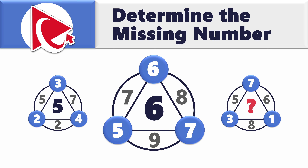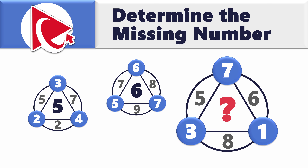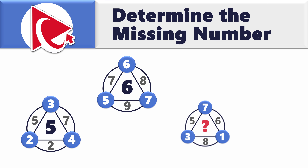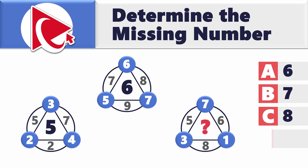In the second shape, the inside numbers are 7, 9, and 8. The outside numbers are 5, 6, and 7, and the middle number is 6. In the third shape, the inside numbers are 5, 6, and 8. The outside numbers are 3, 7, and 1, and the middle number is missing — which you need to calculate and select out of four possible choices: Choice A: 6, Choice B: 7, Choice C: 8, and last but not least, Choice D: 9.